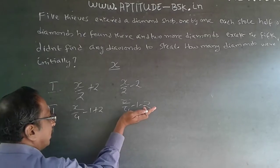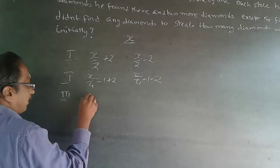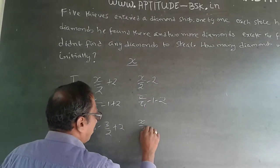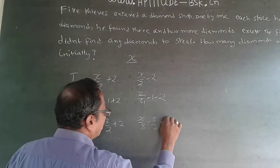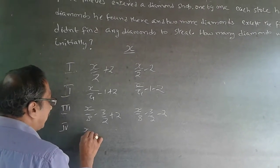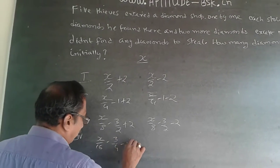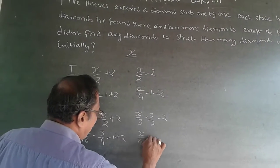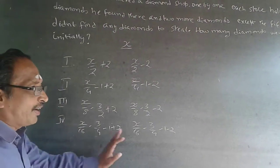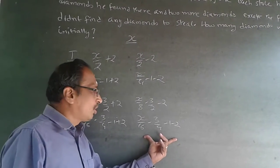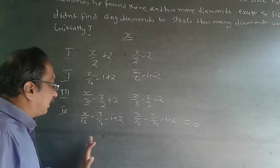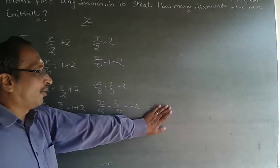When the third person goes in, they take half of the remainder, giving X/8 minus 3/2 plus two, leaving X/8 minus 3/2 minus two. The fourth person takes half, leaving X/16 minus 3/4 minus one minus two. When the fifth thief enters, they find nothing — this remainder equals zero.